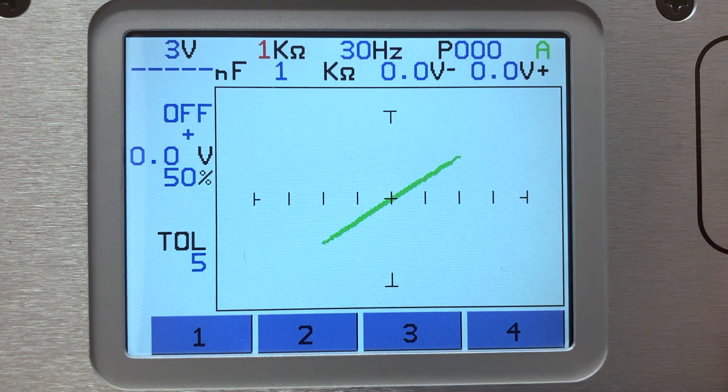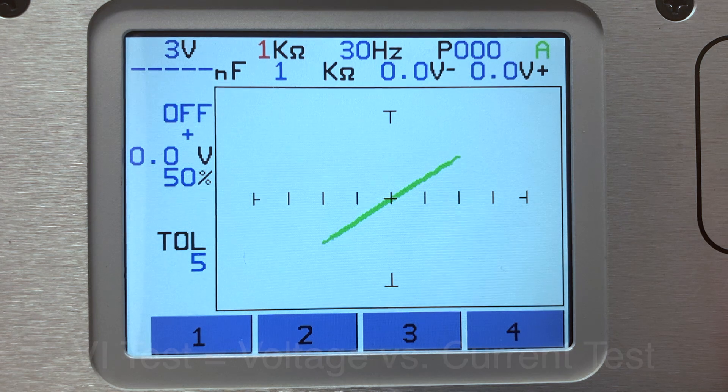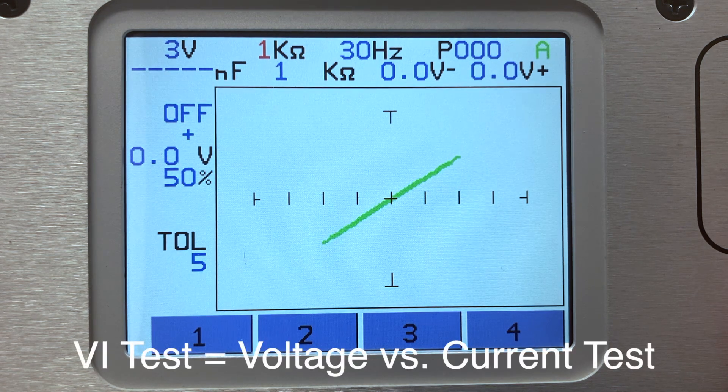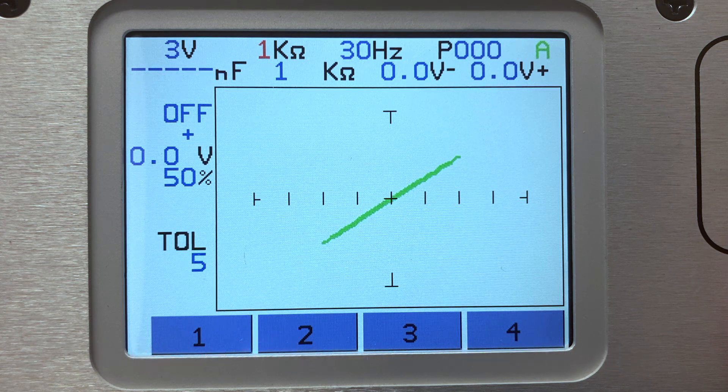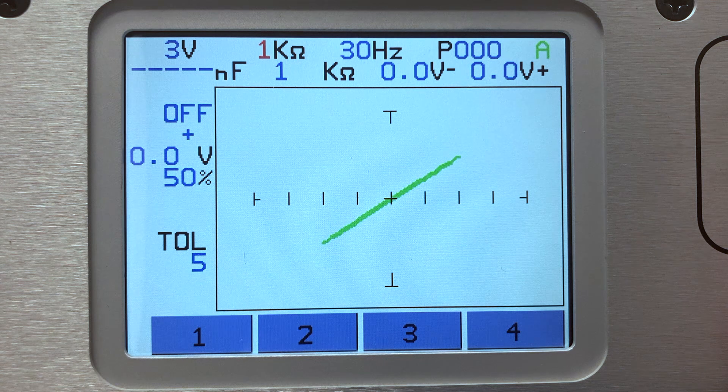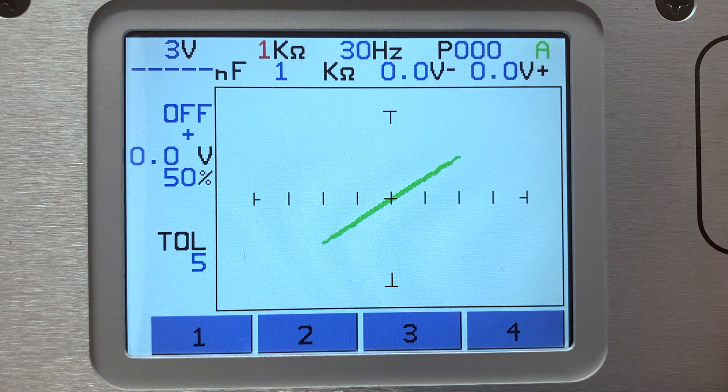This is why analog signature analysis is sometimes called VI or voltage versus current test. It is an actual representation of how voltage and current react within the component. A resistor signature is probably the clearest example of this concept.